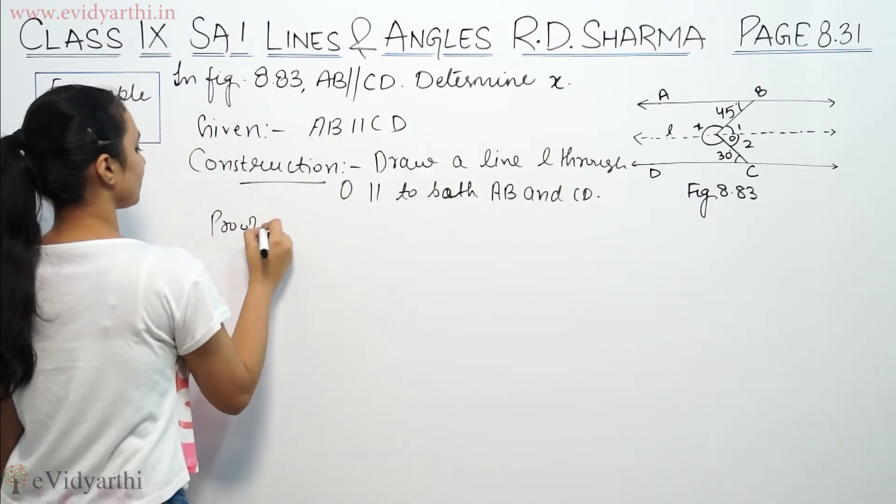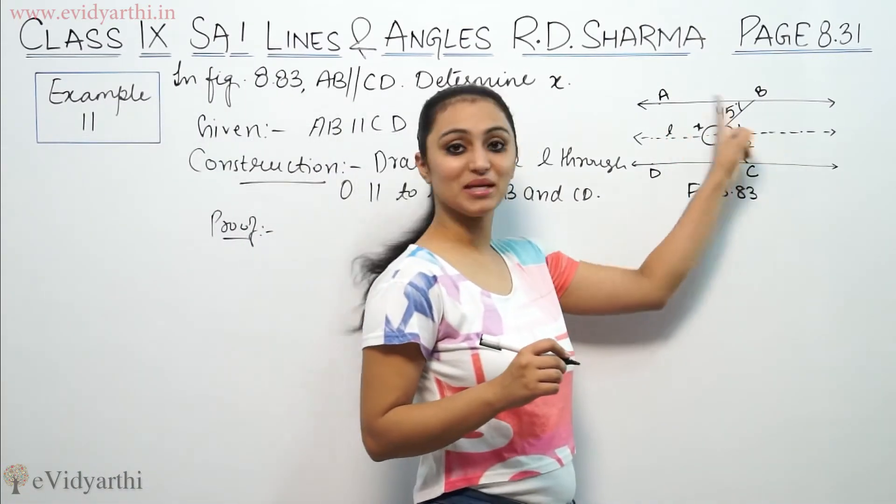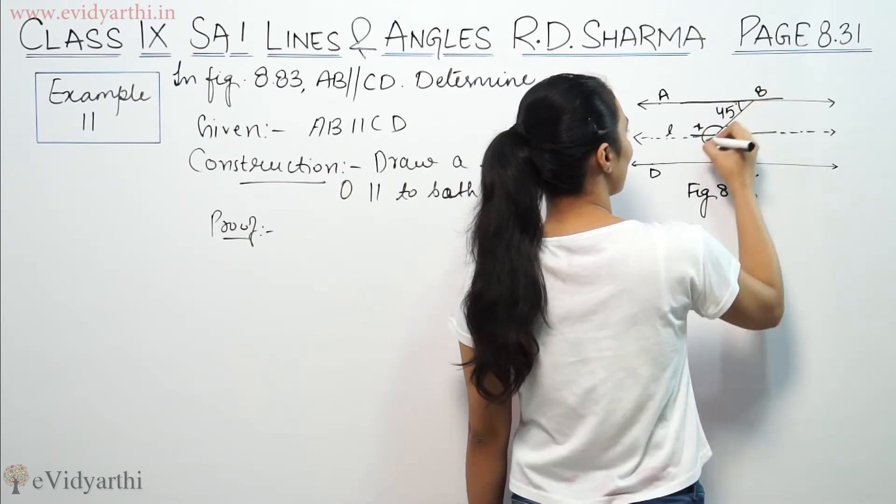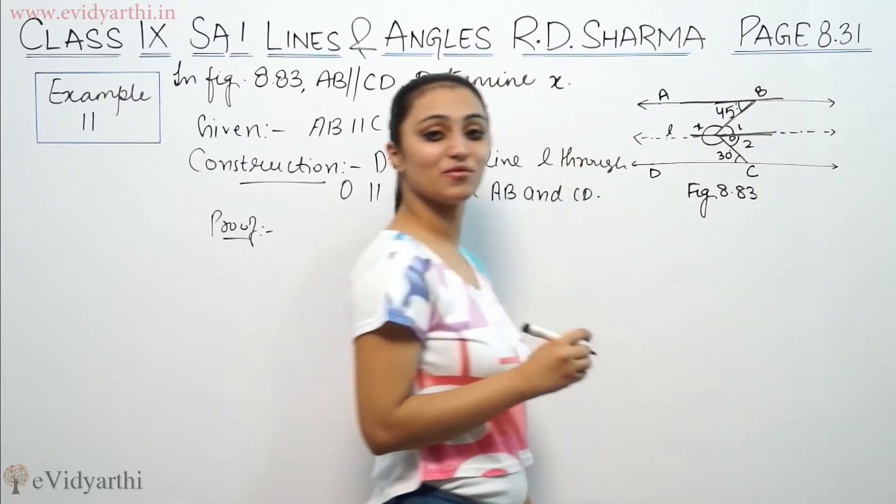Now proof. In the proof, line L is parallel to AB. So we have parallel lines, and this makes a transversal forming a Z shape. So if this is 45 degrees, then angle 1 is 45.